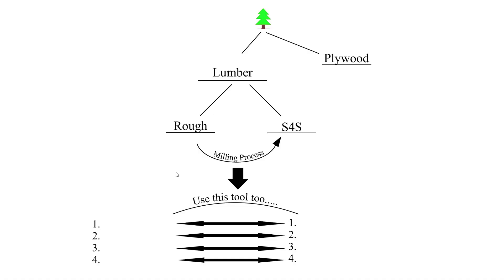So we talked about taking a rough board and using the milling process to make it S4S. This is our first and most fundamental step to milling lumber to begin our projects, and that means we use specific tools to complete these steps.